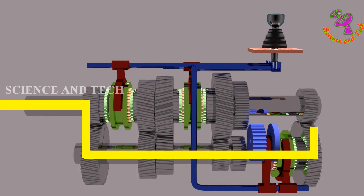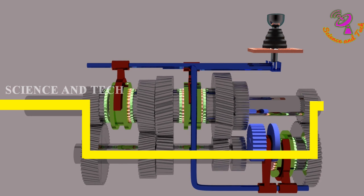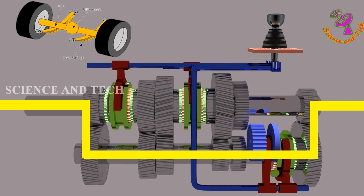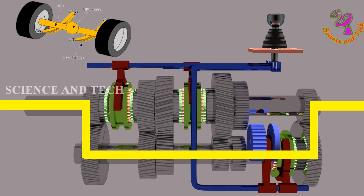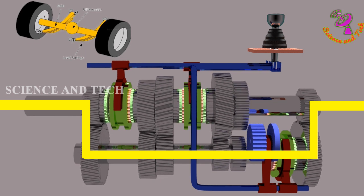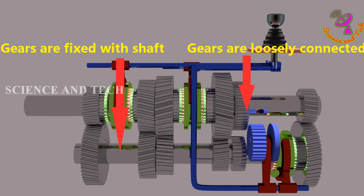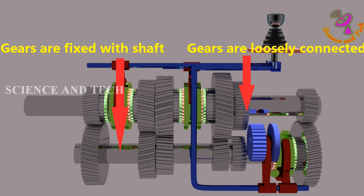Output shaft is connected with wheels through drive shaft. As a result, wheels are rotating depending on gears transmission. These rotational motion transfers among gears. The counter shaft gears are fixed with shaft and output gears are loosely connected.